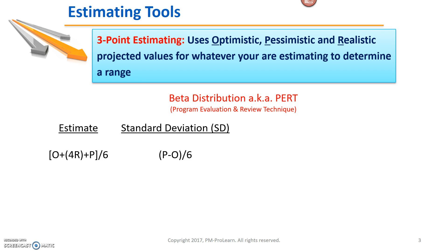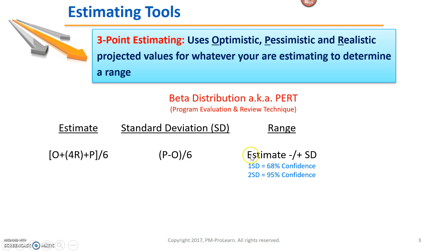The second step in coming up with a range is to figure out the standard deviation. This is a statistical term, but you don't need to get deep into the weeds — you're trying to pass a PMP exam, not become a statistician. Just know the formula: pessimistic minus optimistic divided by six gives you the standard deviation. Once you know that, you can take your three-point estimate and subtract and add one standard deviation to come up with a 68% confidence level, or two standard deviations to come up with a 95% confidence level.